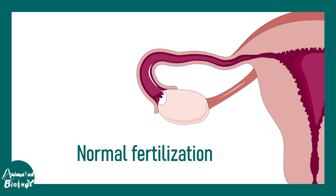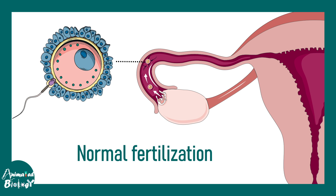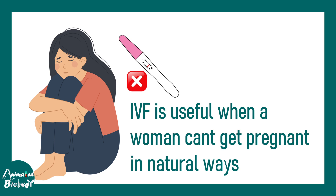Let us understand the normal procedure of fertilization. In every menstrual cycle there would be a release of oocyte into the female reproductive tract — this is the normal process of ovulation. If sperm is also present at the same time, fertilization can happen. But in many circumstances normal fertilization is not achievable — maybe the sperm is not motile enough, or there could be a problem in the female as well. In those conditions, IVF is done.